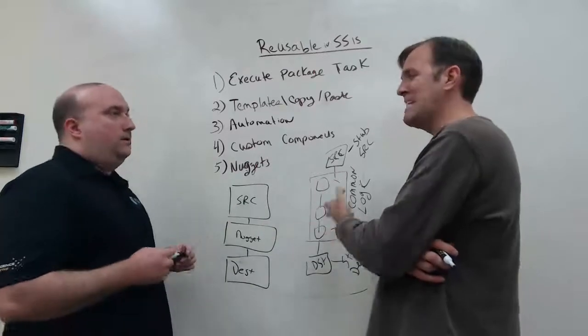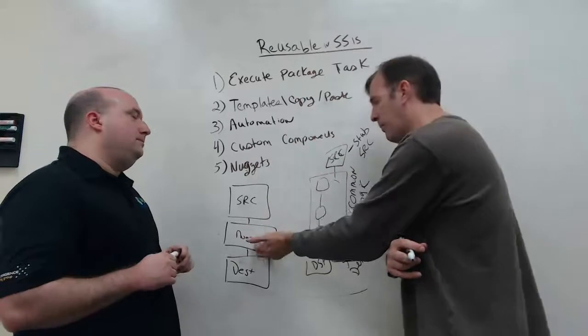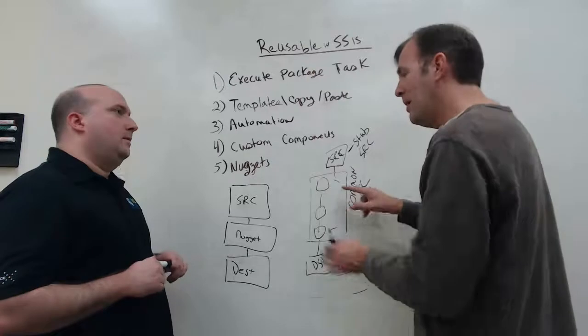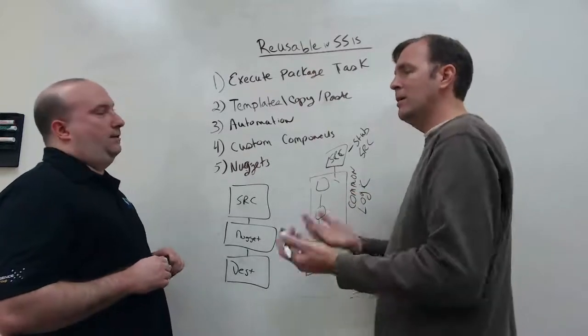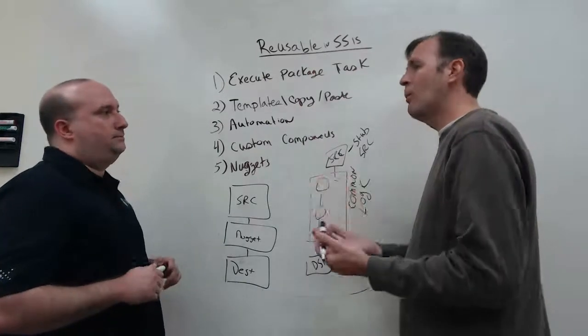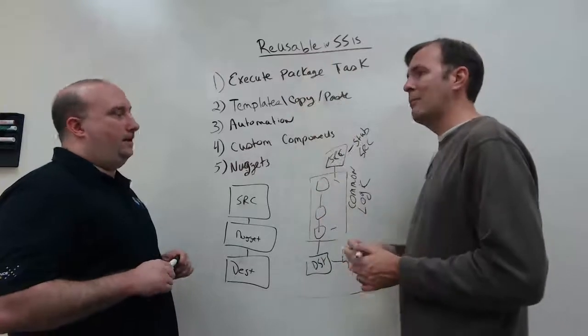And what happens is, at runtime, we physically go in and take this nugget transform out and replace it with whatever is defined here. Because of that, we have to create a special execute package task. So, as you call this package, it will replace all this logic. And the nice thing about that also is if I change this logic right here, my nugget, or my components that are using that nugget, will also change. Exactly. So, I make that change in one place and everything benefits.